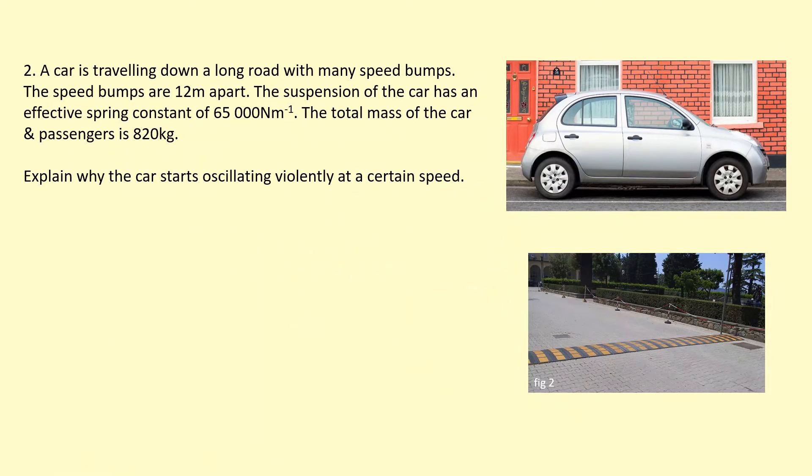In this example, we've got a car which is traveling down a long road with many speed bumps. The speed bumps are 12 meters apart. The suspension of the car has an effective spring constant of 65,000 per meter, and the total mass of the car and passengers is 820 kilograms. Explain why the car starts oscillating violently at a certain speed.